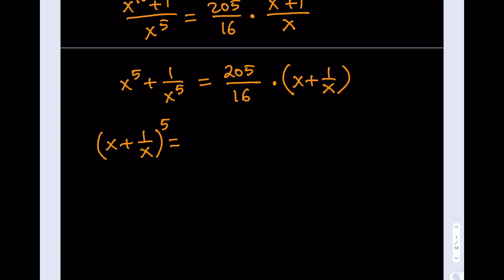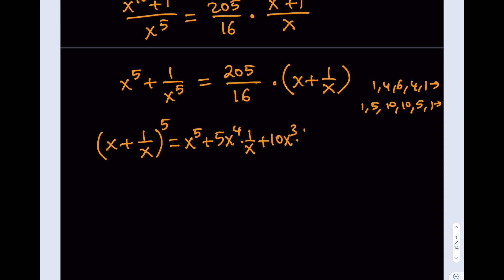In Pascal's triangle, row number 5, our coefficients are 1, 5, 10, 10, 5, 1. So expanding x plus 1 over x to the 5th, I get: x to the 5th, plus 5x to the 4th times 1 over x, plus 10x cubed times 1 over x squared, plus 10x squared times 1 over x cubed, plus 5x times 1 over x to the 4th, plus 1 over x to the 5th power.